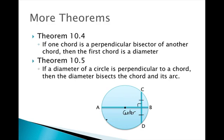Theorem 10.5 is kind of its converse. If the diameter of a circle is perpendicular to a chord, then the diameter bisects the chord and its arc. So if we know this is a diameter and it's perpendicular to a chord, then it not only bisects the chord but also bisects the arc — meaning arc CB is congruent to arc BD.